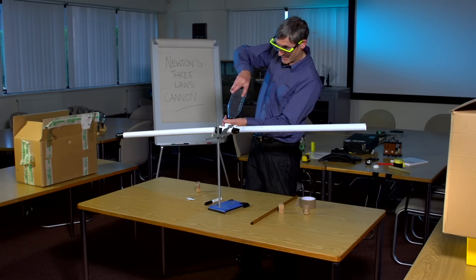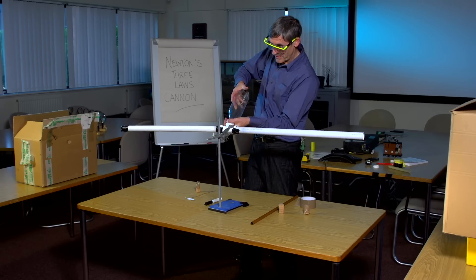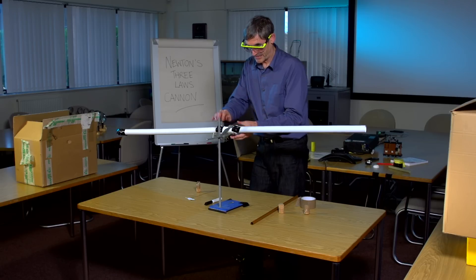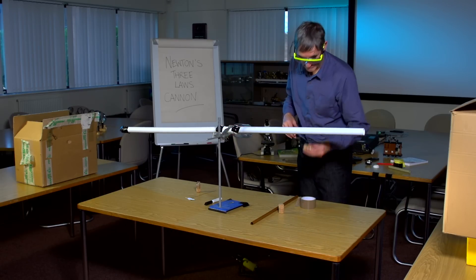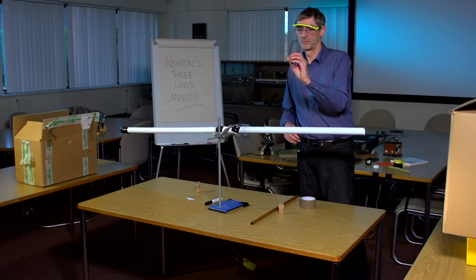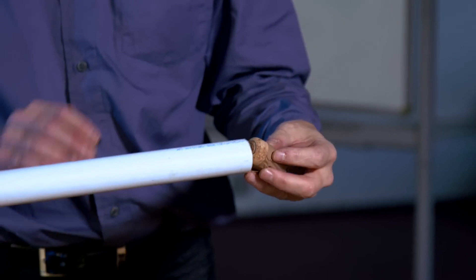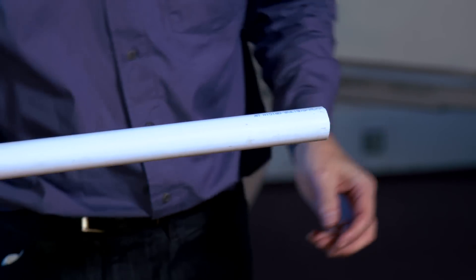We're going to plug that into the tee piece, and then load a projectile. The projectile is a cork with a small piece of weight added in the form of blue tack, and we'll just ram that home into the barrel.